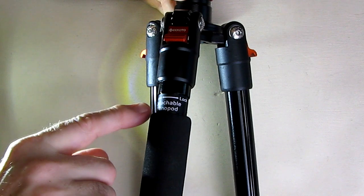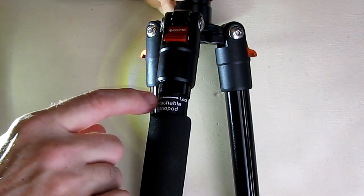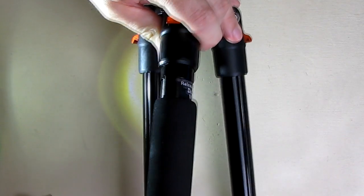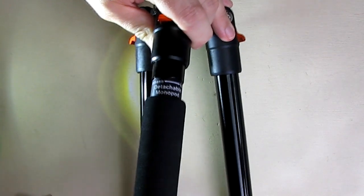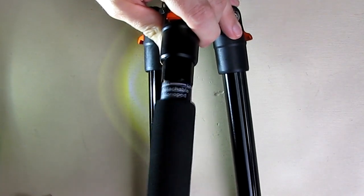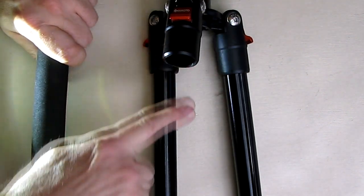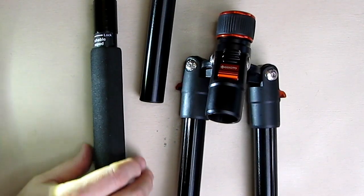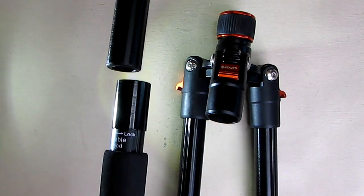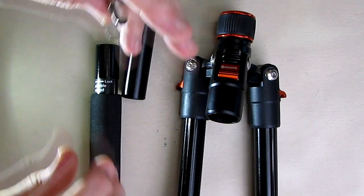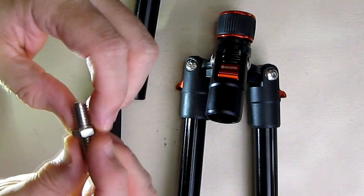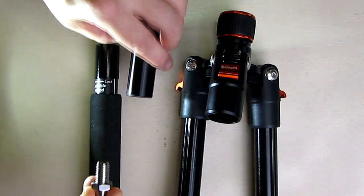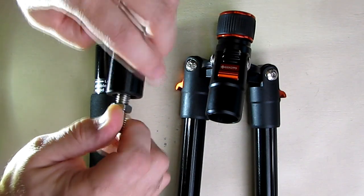If you notice, one of these legs—the one that has the cushion on there—has a detachable monopod. All you do is turn this counterclockwise and remove this leg. You're going to create a monopod by using this center section that we removed. Now you have the ability to make a monopod. This piece was included.